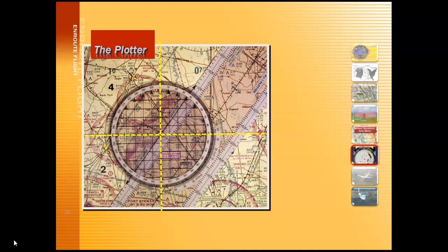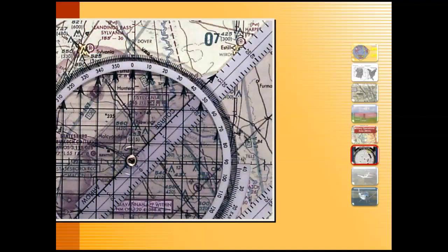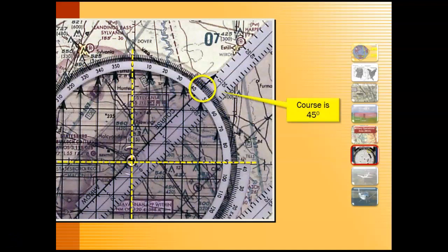We draw a line between our checkpoints or between our departure point and destination, and we need to determine the true course to get started. To do that, we place the plotter on the line we've drawn and rotate the plotter to line up zero with the closest line of longitude. We measure our distance using the correct scale — nautical miles on the sectional chart scale. In this case, there are 57 nautical miles between Claxton-Evan County Airport and our destination. Next, we place our plotter on our course line and rotate it so that zero lines up with the closest line of longitude — that is true north. Whatever is indicated in the direction of our flight is the true course; in this case, our true course is 45 degrees.